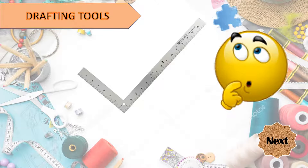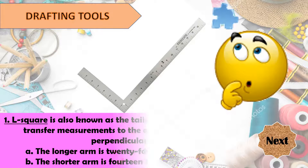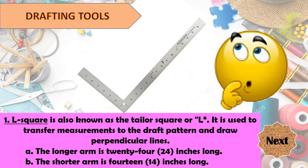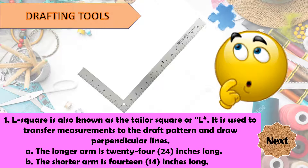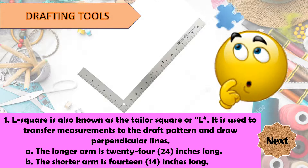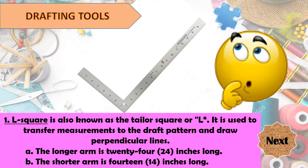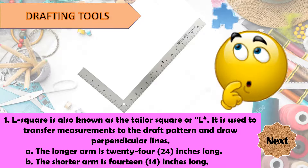What drafting tool is this? Oh yes! It is the L-square, also known as the Taylor Square. It is used to transfer measurements to the draft pattern and draw perpendicular lines. So when you start drafting your pattern, you start with a perpendicular line and you use the L-square. It has a longer arm of 24 inches and a shorter arm of 14 inches long.